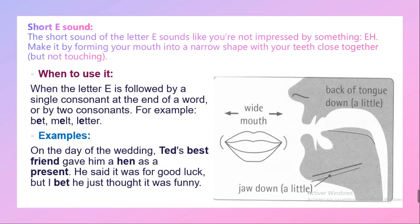Now let's take each sound in detail. The short sound /ɛ/: it sounds like you're not impressed by something, like you're saying 'eh', making it by forming your mouth into a narrow shape with your teeth close together. When to use it: when the letter E is followed by a single consonant at the end of a word, or by two consonants.